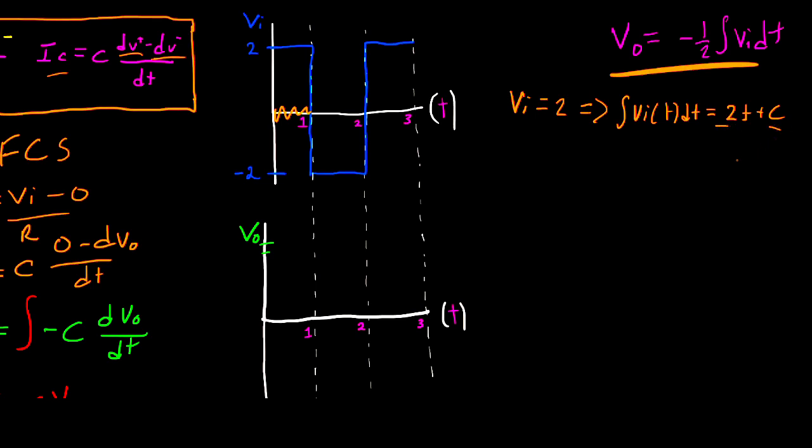So now what I can do is, now that I know the integral of VI of T is equal to 2T, and C in this case is going to be 0 because we're starting off from the beginning at time is equal to 0, and we don't have an initial condition. Let's plug this into our VO equation, and we'll have that VO is equal to negative 1 over 2 multiplied by 2T.